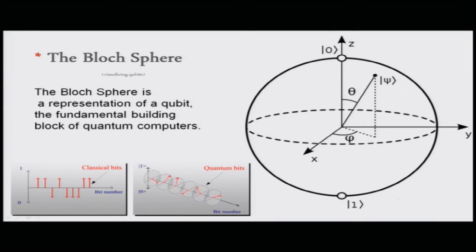To visualize qubits, we invoke the Bloch sphere — a representation of a qubit, the fundamental building block of quantum computers. The qubit's arrangement can be anywhere on the sphere. Classical bits have singular values of zero or one, whereas quantum bits can assume continuous variables at any point in time; however, whenever you measure them, the result is one or the other.